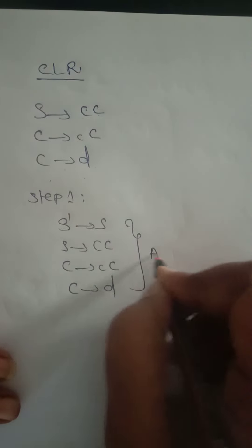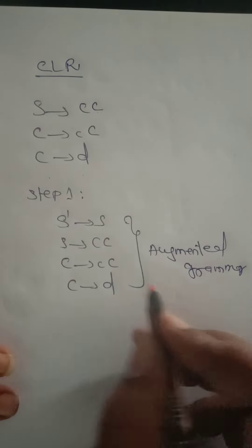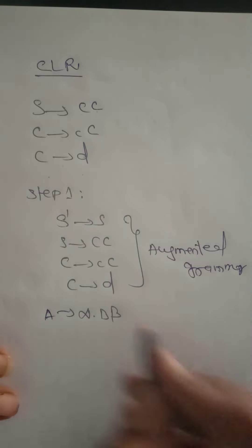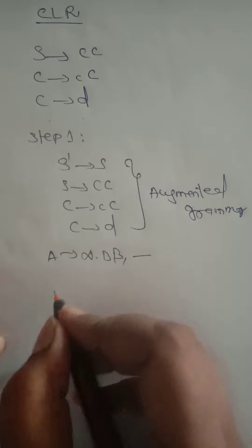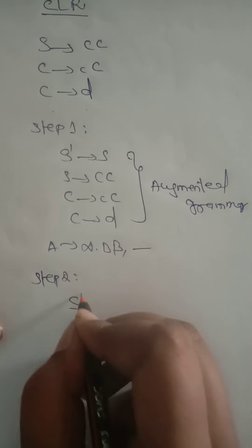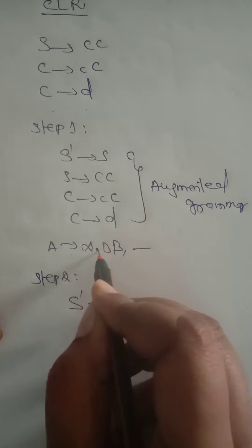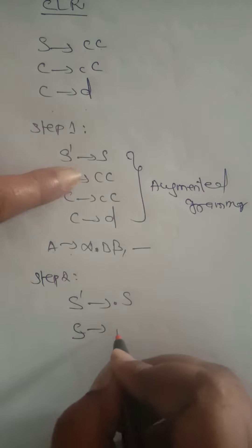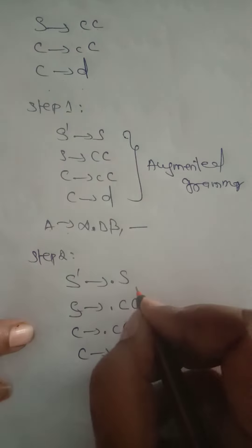Step one: we have to introduce a new production. The new production is S' → S, where S is the starting variable. Then write the remaining productions: S → CC, C → cC, C → d. This is called the augmented grammar. Next, we have to find the second component — each production is written in the form A → α·Bβ, with a dot added at the starting point of each production: S' → ·S, S → ·CC, C → ·cC, C → ·d.